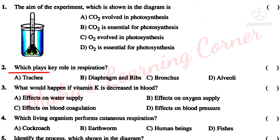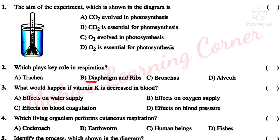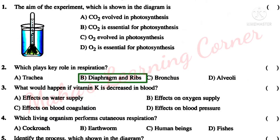Second question: which plays a key role in respiration? Option A: Trachea. Option B: Diaphragm and ribs. Option C: Bronchus. Option D: Alveoli. Correct answer: B — Diaphragm and ribs.